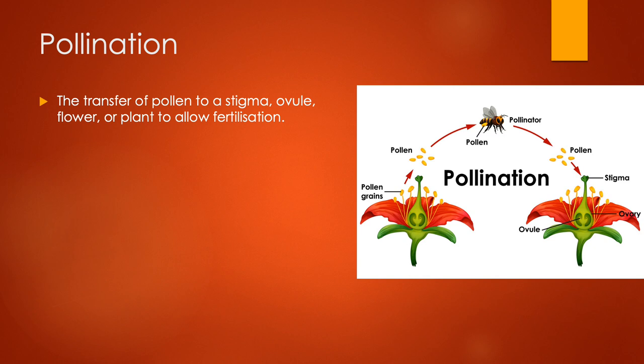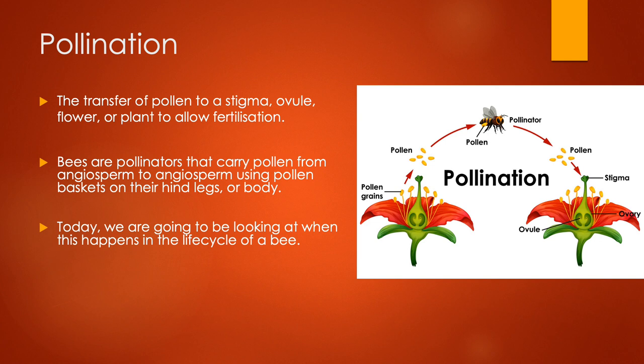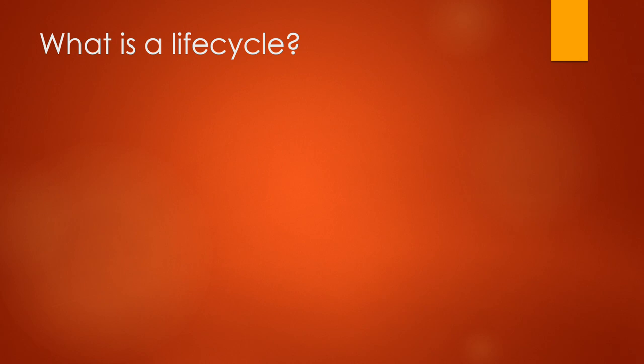Pollination is the transfer of pollen to a stigma of your flower or plant to allow fertilisation. Bees are pollinators that carry pollen from angiosperm to angiosperm, so carry pollen from flowering plants to different flowering plants. They do this using their baskets on their hind legs or body.